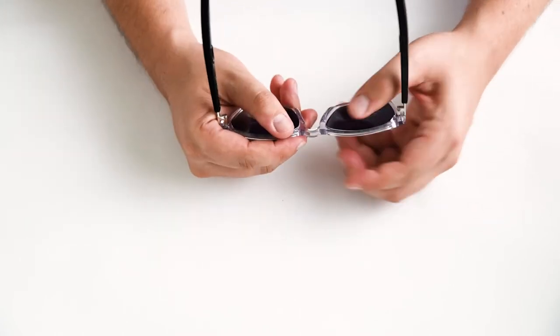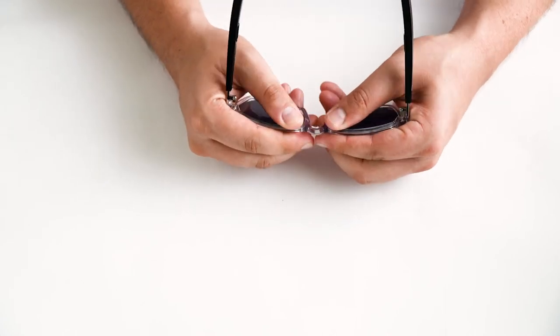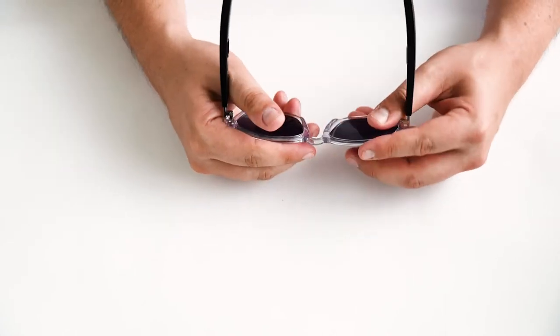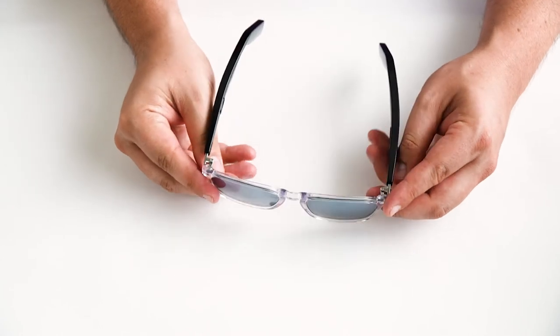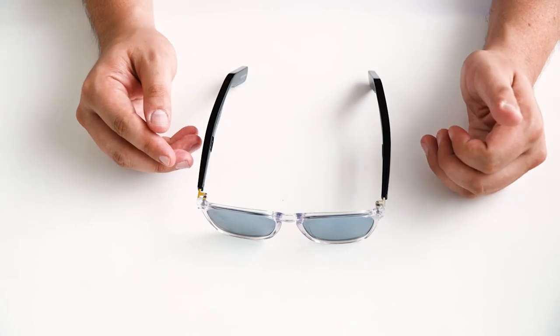To tighten the glasses, bend inwards at the bridge. This will tighten the angle of the arms and make the glasses fit a bit tighter. Again, we recommend taking your glasses to your local optician for any front plate adjustments, but you can do these quick adjustments at home to make the glasses fit a bit better.